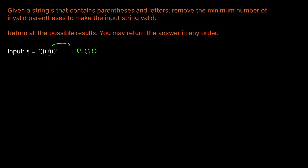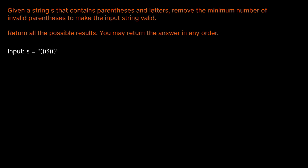We could remove that invalid right parenthesis and get one valid answer. Or, we could remove one of the other right parentheses earlier in the string. For example, removing a different right parenthesis gives us left-left followed by right-right, which is also valid. In both cases we've removed just one parenthesis. Obviously we could remove every single parenthesis, but we're looking for the minimum number to remove.